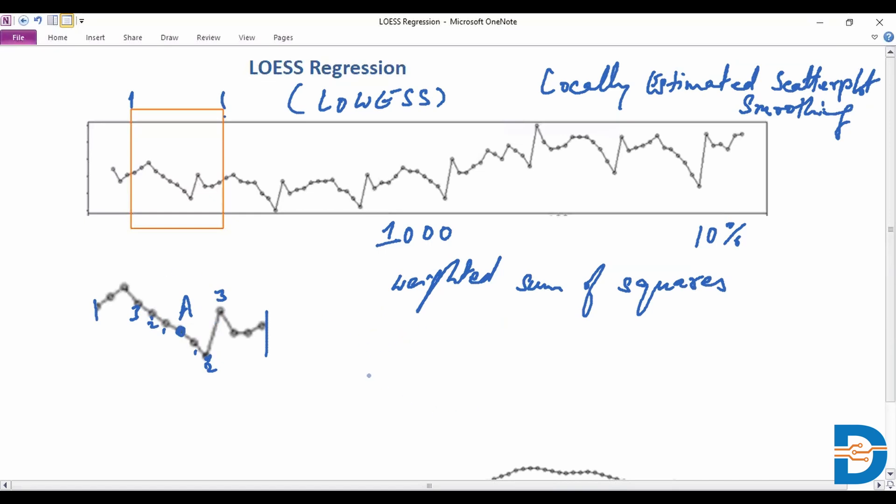Based on the weighted sum of squares that we are trying to get to a minimum, we will have a prediction line for this particular segment. Then we're talking about this particular window over here which represents about 10 percent of the total data. In our case probably we're talking about 120 points and 10 percent would represent just about 12 points which we have here.